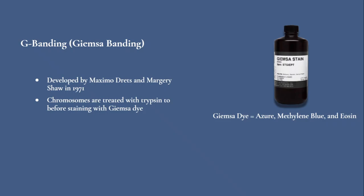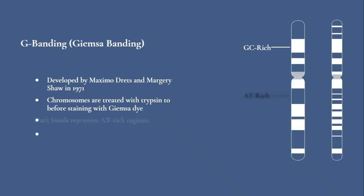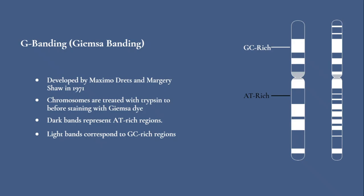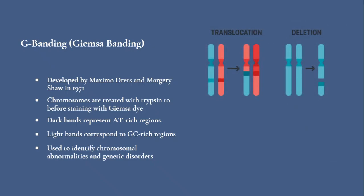The Giemsa dye mixture includes azure, methylene blue, and eosin. Dark bands represent heterochromatic regions, which are typically AT-rich (adenine and thymine-dense), while light bands correspond to euchromatic regions, which are GC-rich (guanine and cytosine-dense). G-banding is mostly used for identifying chromosomal abnormalities and genetic disorders like deletions or translocations.